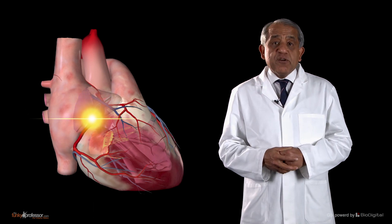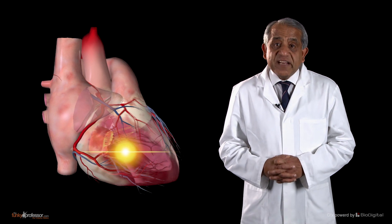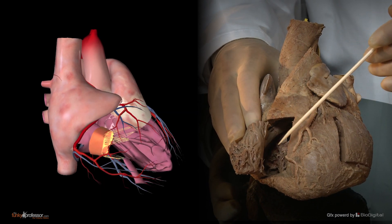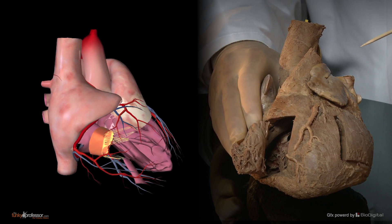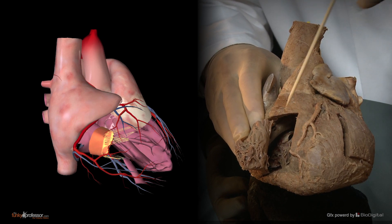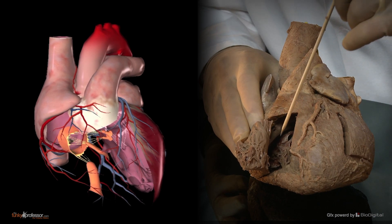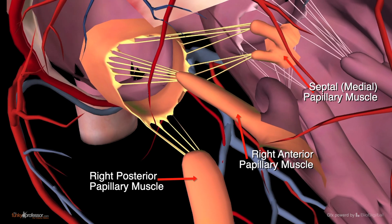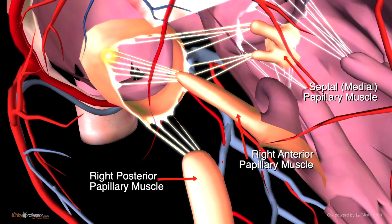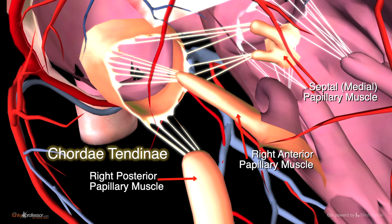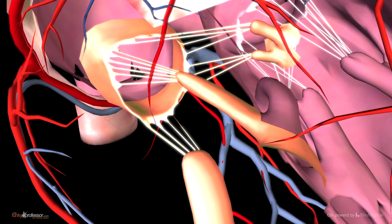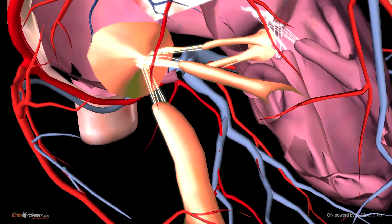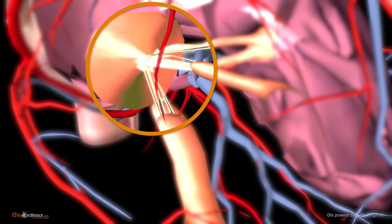Moving through the right atrioventricular orifice past the tricuspid valve into the right ventricle, notice how different the interior is from the right atrium — it is ridged. Every now and again you come across a nipple of muscle: the papillary muscle. These papillary muscles send out thin cords — the chordae tendineae — which attach to the edges of the cusps of the tricuspid valve. When the ventricle contracts, so do the papillary muscles, exerting tension on the chordae tendineae, which hold the cusps together and prevent them from prolapsing back into the right atrium.